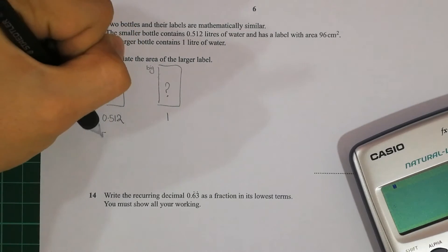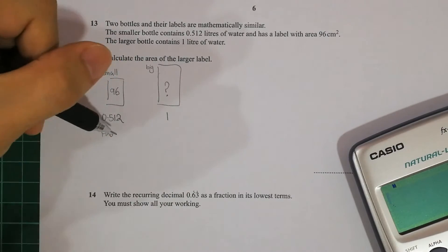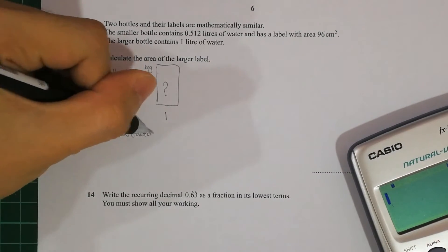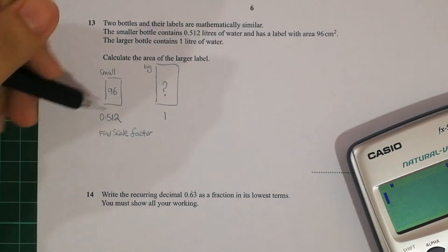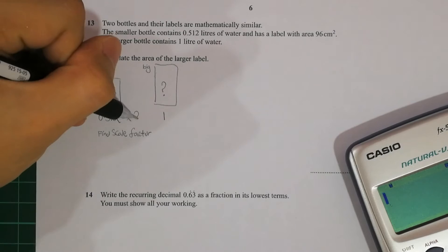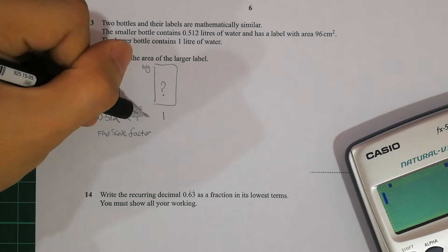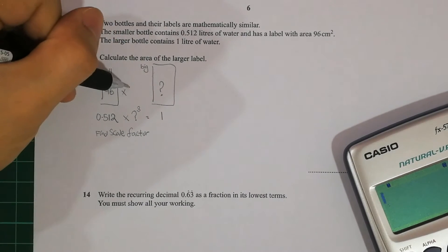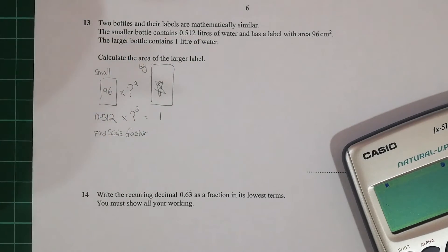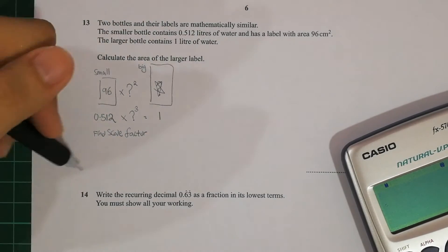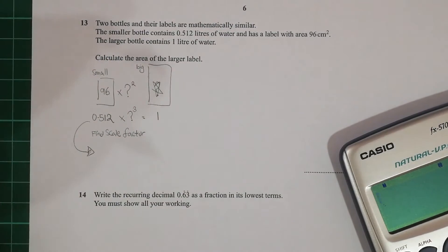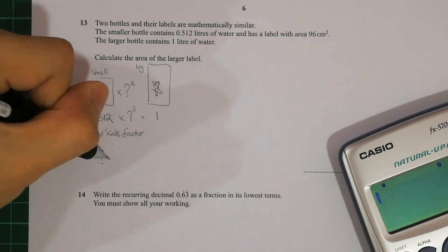So for this type of question, if you solve mathematically similar, it means that they are multiplied to a certain scale factor. So for liters, it is to the power of 3. So 0.512 times k to the power of 3 equals to 1, and 96 times k to the power of 2 to the bigger area.